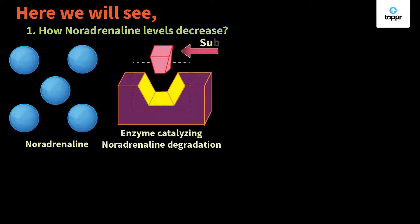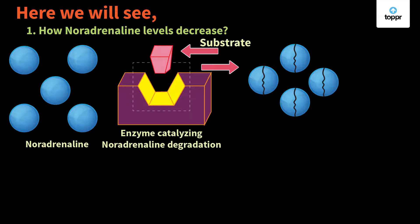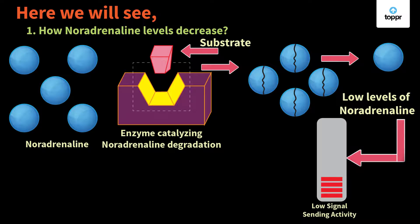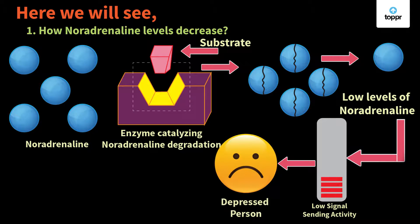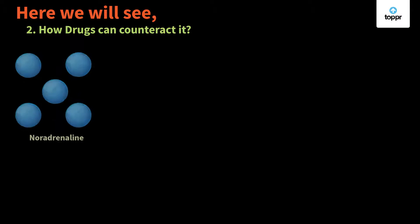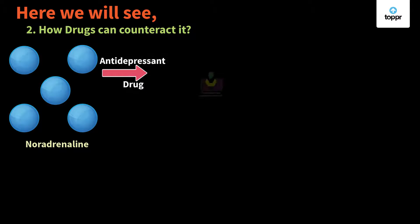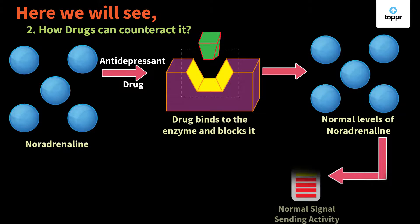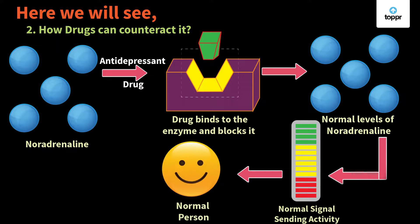To see how noradrenaline levels get lowered, let's look at enzyme activity. In our body, there is an enzyme which, when it binds with its substrate, results in the degradation of noradrenaline. Since the degradation is catalyzed, the level of noradrenaline gets lowered, and signal activity falls — causing depression. When we administer a drug, it binds with the enzyme and inhibits the catalytic activity, stopping the degradation of noradrenaline. The normal level of noradrenaline maintains normal signal-sending activity, and the person remains normal and happy.